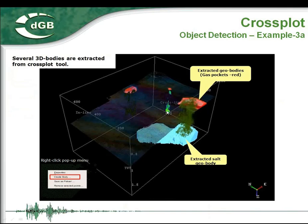You can also do object detection using cross-plot. It allows you to create geo-bodies from selected points. Here you see different bodies in red — these are actually gas pockets and salt which are coming from the cross-plot in OpenDetect. That's another application.